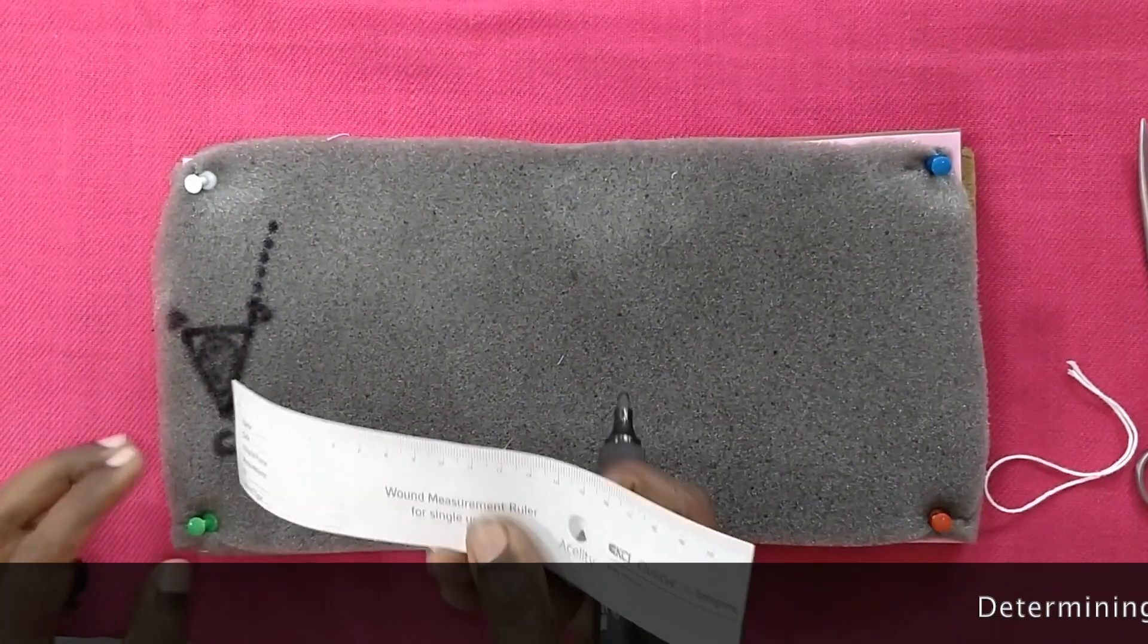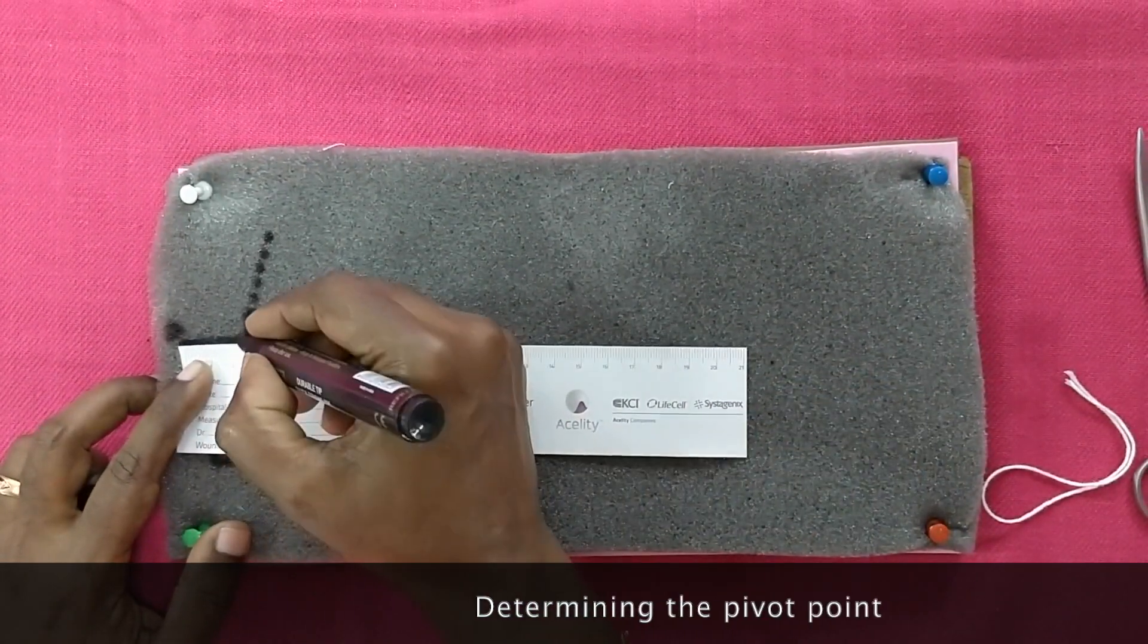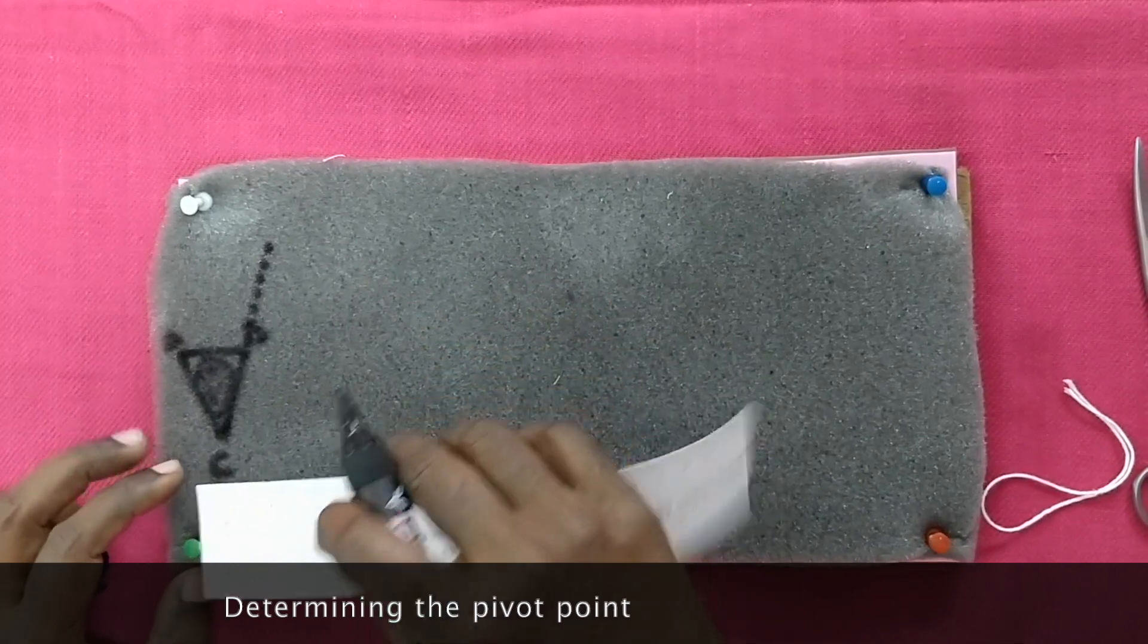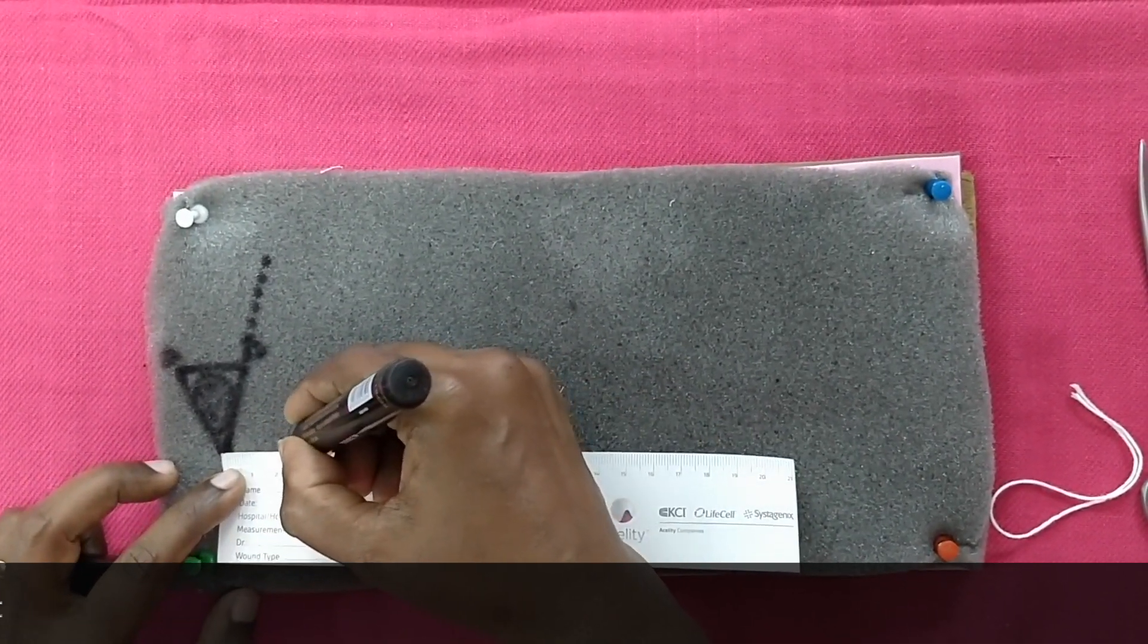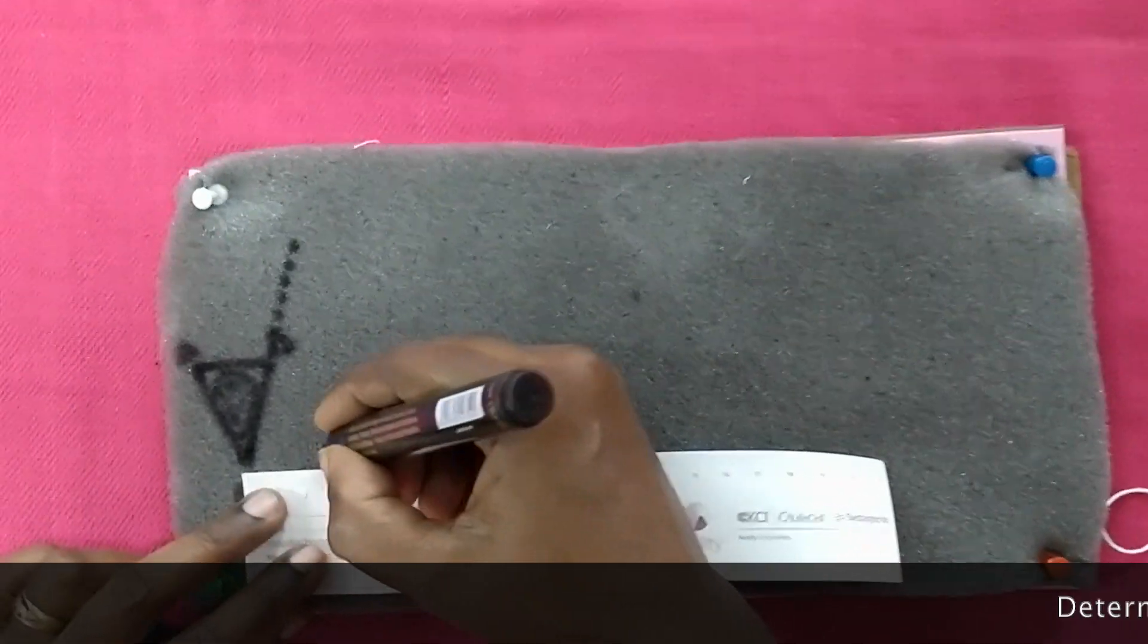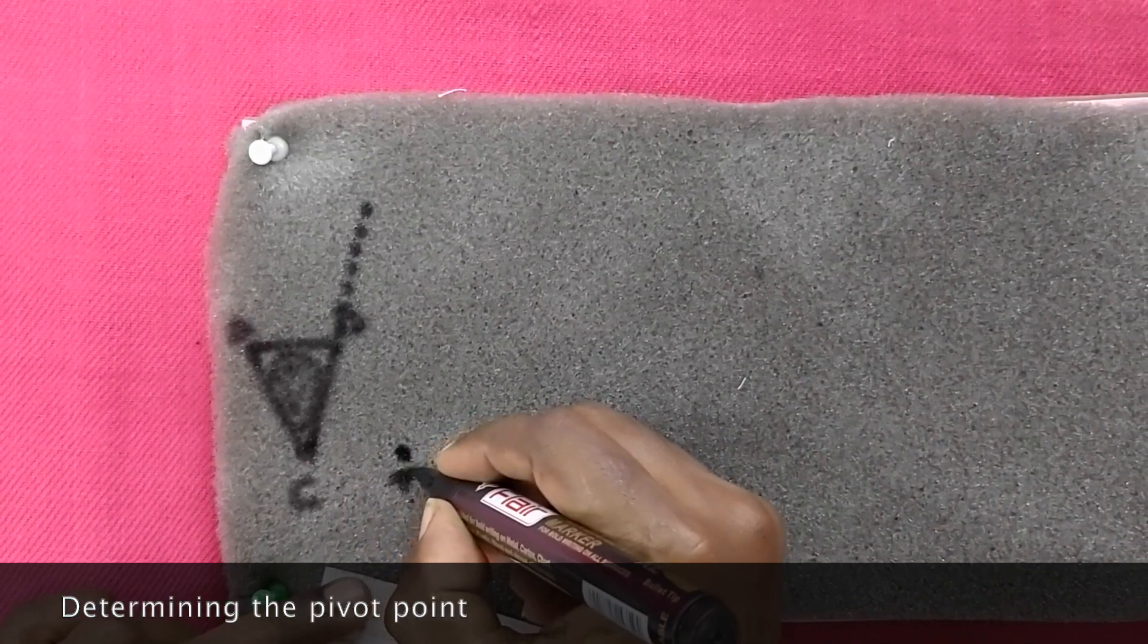Now we need to determine the pivot point D. For that we measure the base AB, and parallel to AB from the point C, we mark the same distance equal to AB. That will be the pivot point D.